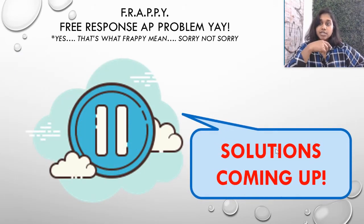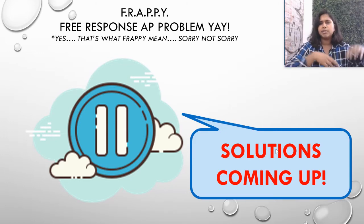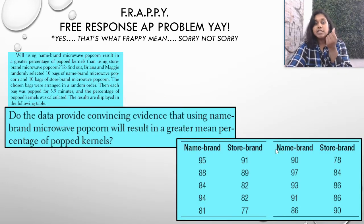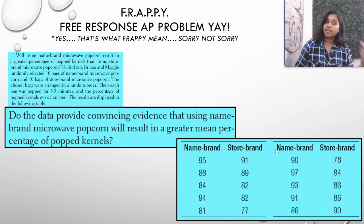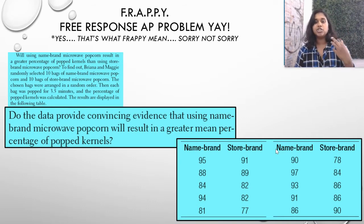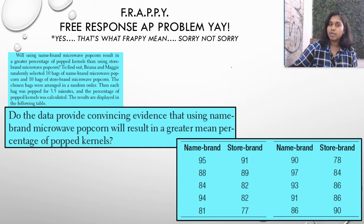Here are the solutions. Again, I suggest you attempt this on your own once or at least read through and mentally set up, like literally talking about what do I know or what don't I know. Those are great questions to ask yourself before seeing the solution. And here they come. So same information, but now I'm highlighting the information that actually makes more sense. Do the data provide convincing evidence that using name-brand popcorn kernels will result in a greater mean percentage of popped kernels?